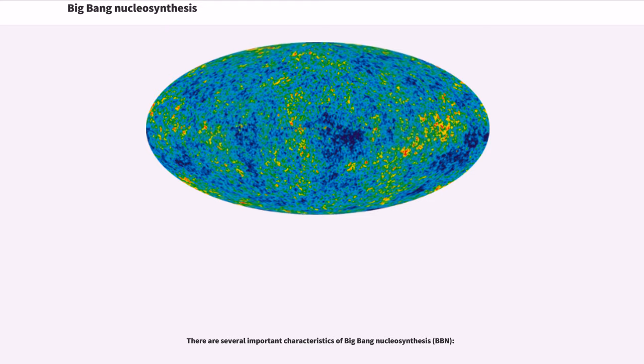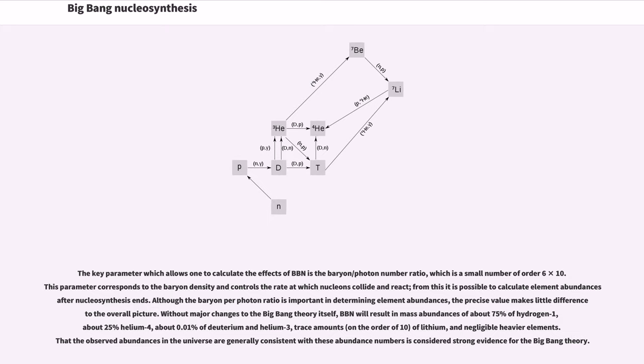There are several important characteristics of Big Bang nucleosynthesis. The key parameter which allows one to calculate the effects of BBN is the baryon-slash-photon number ratio, which is a small number of order 6 times 10 to the negative 10. This parameter corresponds to the baryon density and controls the rate at which nucleons collide and react. From this it is possible to calculate element abundance after nucleosynthesis ends. Although the baryon-per-photon ratio is important in determining element abundances, the precise value makes little difference to the overall picture. Without major changes to the Big Bang theory itself, BBN will result in mass abundances of about 75% of hydrogen-1, about 25% helium-4, about 0.01% of deuterium and helium-3, trace amounts of lithium,